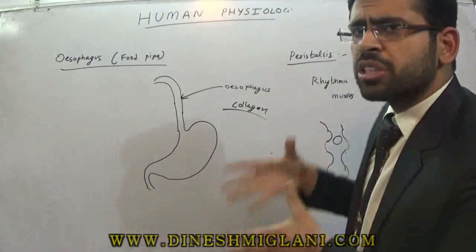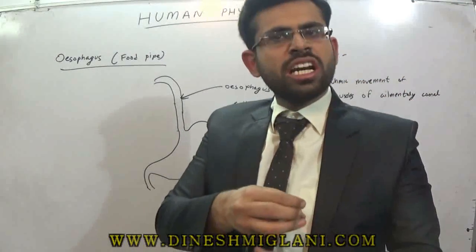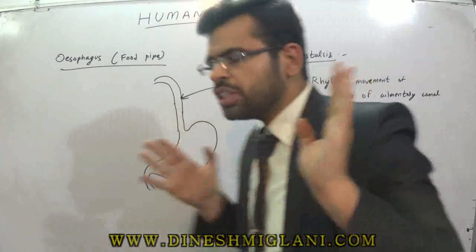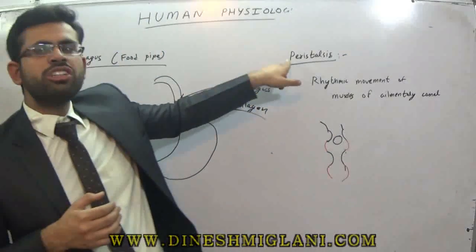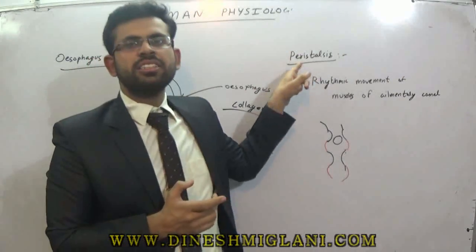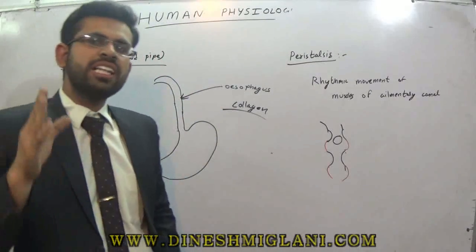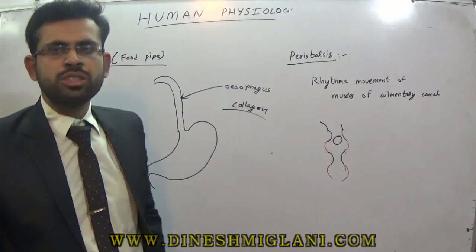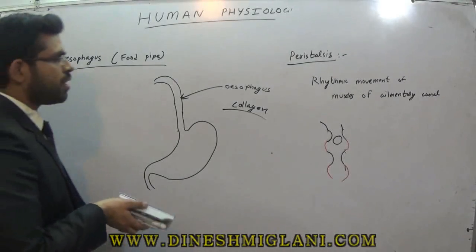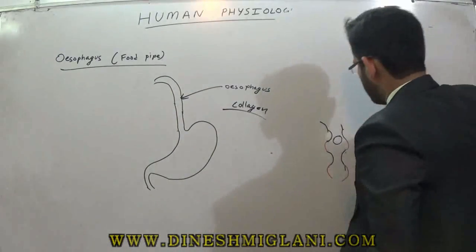One muscle contracts then the other relaxes, then the other contracts then the other relaxes — this is happening continuously. This pushing of food by the continuous contraction and relaxation of smooth muscles of the alimentary canal is known as peristalsis. Peristalsis continues throughout your life; if peristalsis stops, that means it is a very serious condition. This was all about peristalsis and the esophagus.